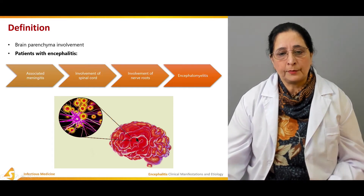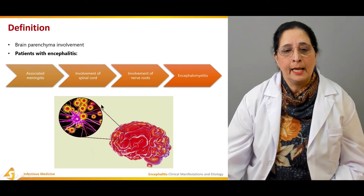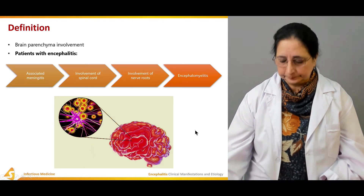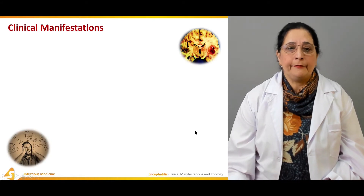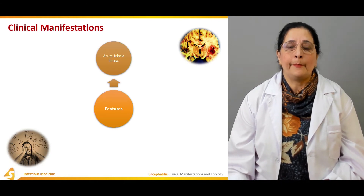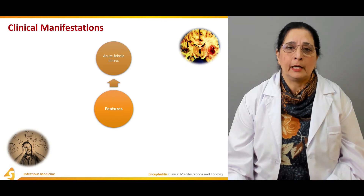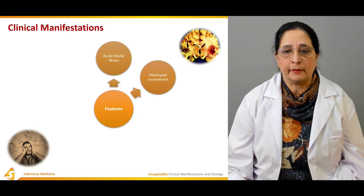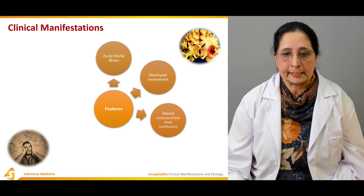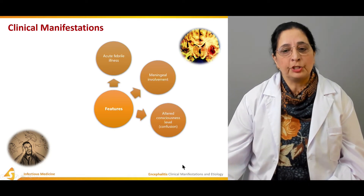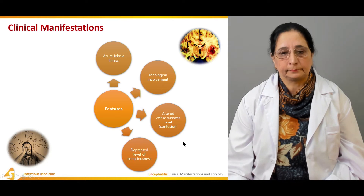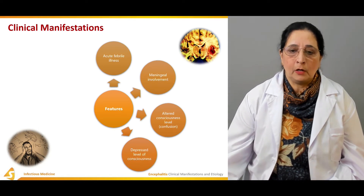Here they show the picture of a small parenchyma area of the brain — that's what encephalitis is when it is affected by infection. The clinical manifestations of encephalitis include acute febrile illness; the patient will present with fever. There is meningeal involvement — the meninges are also affected — and an altered level of consciousness, so the patient might have confusion and a depressed level of consciousness.